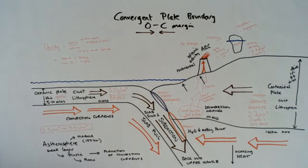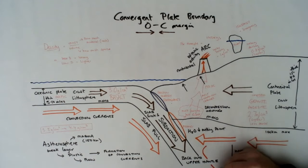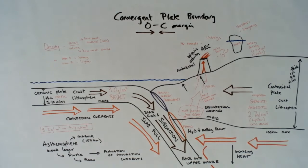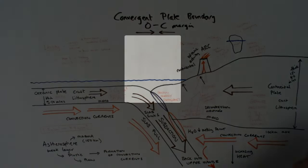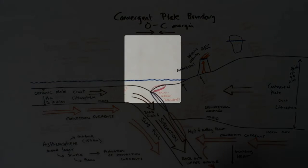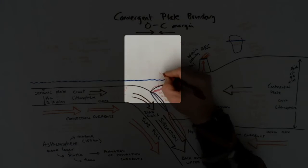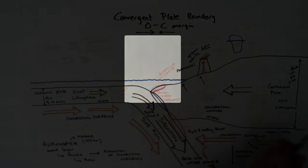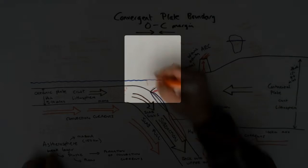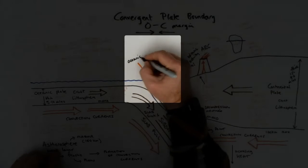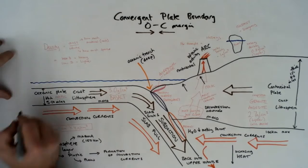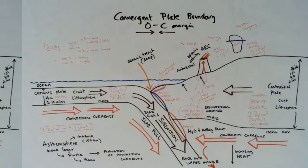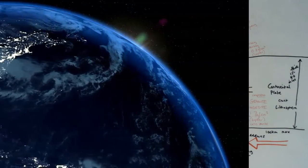Two features are also formed from the subducting oceanic plate: the ocean trench — off the coast, where the subducting plate starts to dive down through slab pull forming a deep part of the ocean — and the accretionary wedge, which is part of the oceanic plate being scraped off and added onto the edge of the continental plate. Here we have the general holistic view of the convergent plate boundary, oceanic to continental.